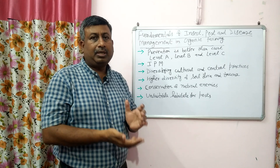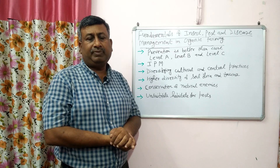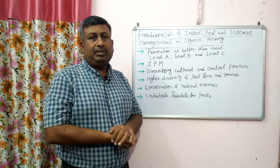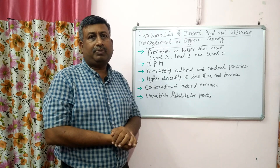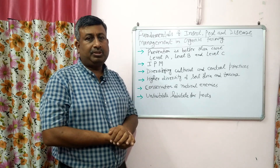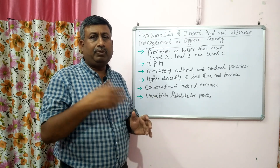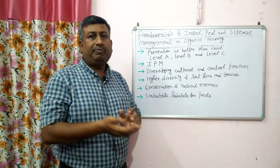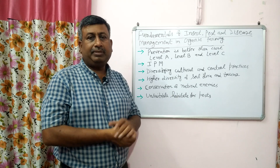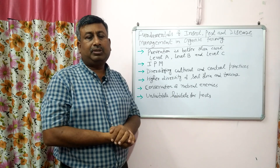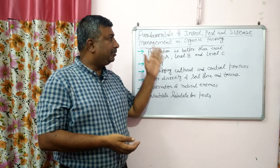In organic farming, synthetics are not allowed — we cannot use any chemical, herbicide, insecticide, pesticide, or fungicide. These chemicals are totally prohibited. So the management is different from the conventional farming system. A pest is any harmful agent that causes harm to the crop, and this pest may be an insect, a disease pathogen, bacteria, or fungus.